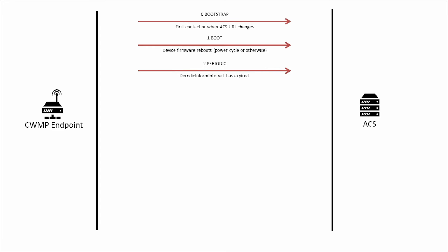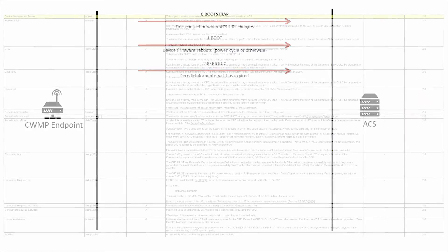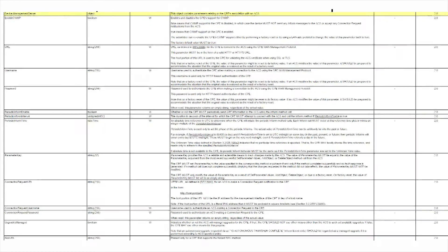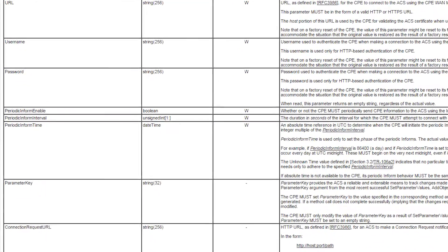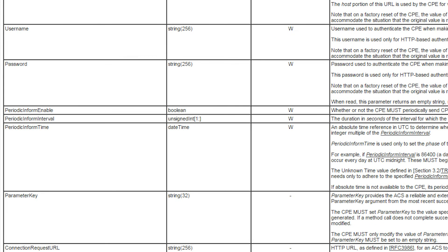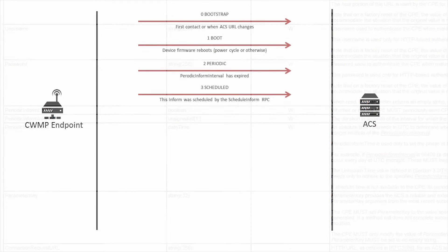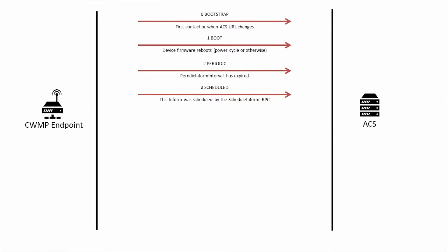The two periodic event is sent whenever the CPE's periodic inform interval expires. This is used to ensure that the CPE contacts the ACS on a regular planned interval and is controlled through the device's data model using the periodic inform interval, periodic inform time, and periodic inform enable parameters. The three scheduled event is based on the specific use of the schedule inform RPC. The four value change event occurs when a parameter that has been marked for passive or active notification changes.